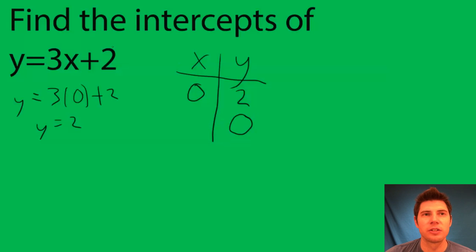Now to find my x-intercept I make y equal to 0. So it's going to be 0 equals 3x plus 2. Subtract 2, negative 2 equals 3x. Divide by 3, I get x equals negative two-thirds. That is my x-intercept.